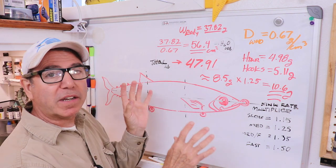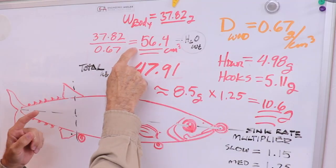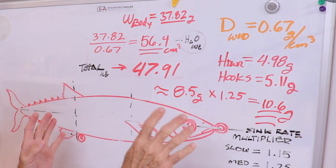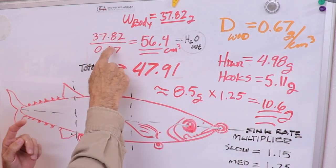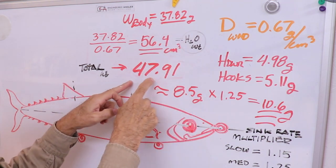Unfortunately that can cause some errors, and in the last video while I was calculating how much weight to put in my lure, I unintentionally added the volume plus my hardware. What I meant to do is add the weight of the actual lure body, 37.82, and that gives me 47.91 grams.